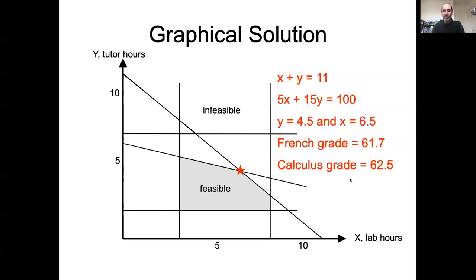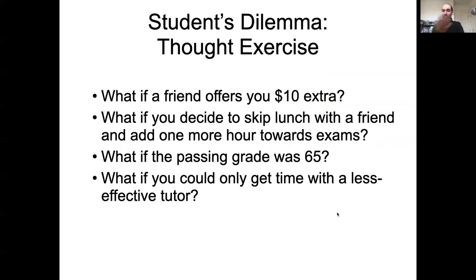So moving on to thinking about scenarios, with this sort of tool in place, you could easily run other scenarios. So like what would happen if you had an extra $10, where would that change our model? And then how would that change our optimum? What if you decided to skip lunch and add an hour more to your number of hours you could study? What if the passing grade was 65, not 50? What if you could only get a less effective tutor, such that the grades per hour changed?